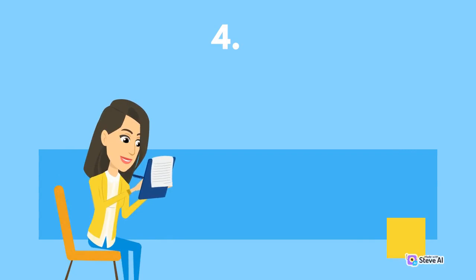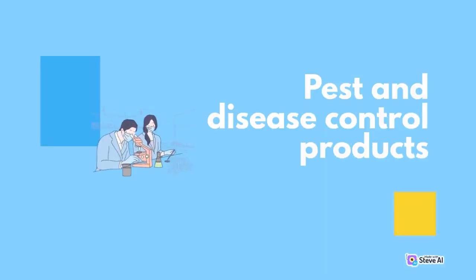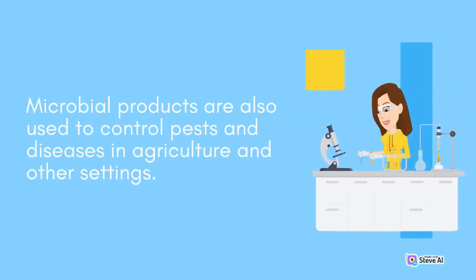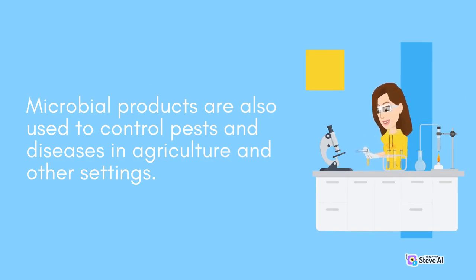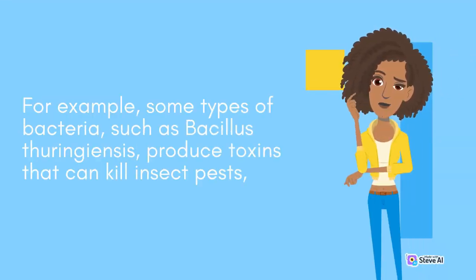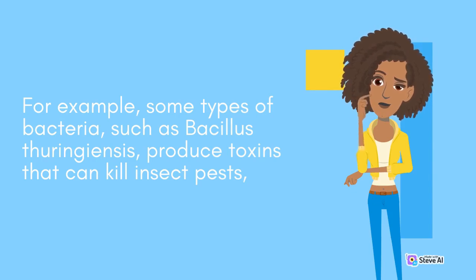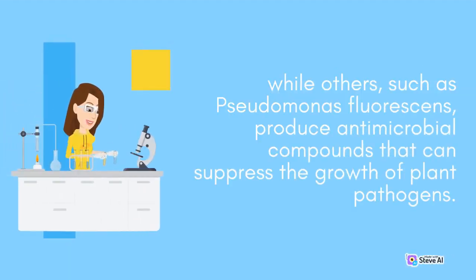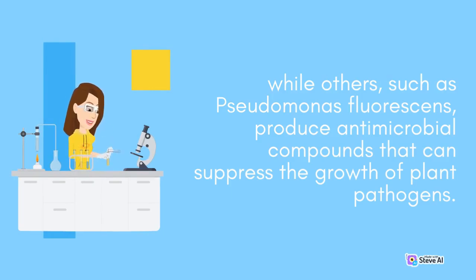4. Pest and Disease Control Products. Microbial products are also used to control pests and diseases in agriculture and other settings. For example, some types of bacteria, such as Bacillus thuringiensis, produce toxins that can kill insect pests, while others, such as Pseudomonas fluorescens, produce antimicrobial compounds that can suppress the growth of plant pathogens.